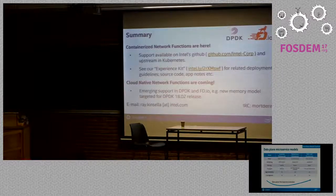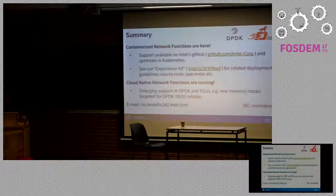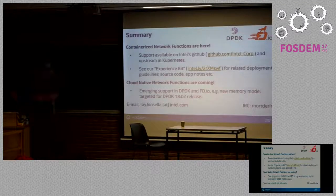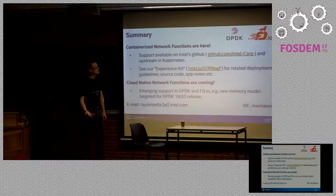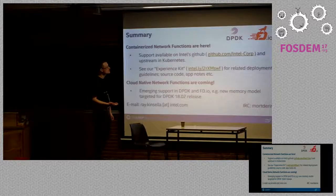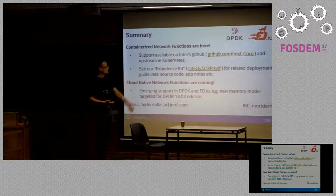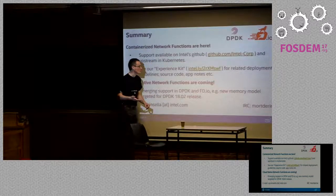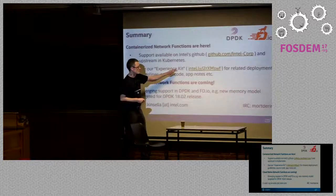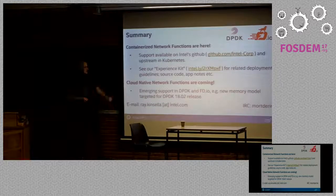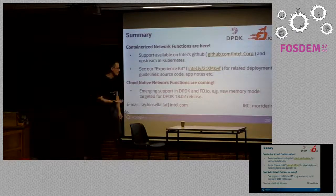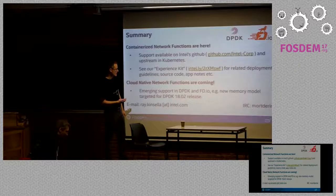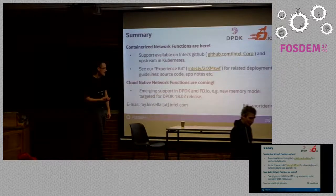I've kind of gone through that at speed — apologies. Just to summarize: we're moving from an age of virtual network functions deployed in virtual machines. We've done a ton of work to support containerization of these network functions — you can go to our GitHub and grab our enhancements for Kubernetes, along with guidelines, application notes, and source code in our experience kit. In terms of cloud-native network functions, we're adding these capabilities to FDIO, VPP, and DPDK — the new enhanced memory model is coming in 1805 — and we'll see more features for better CPU sharing, memory sharing, and I/O sharing.